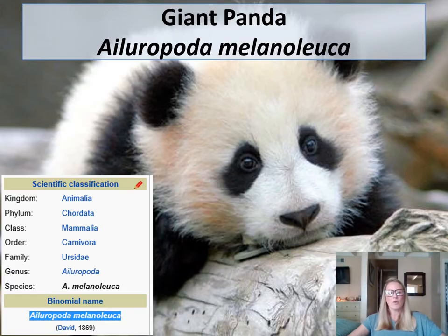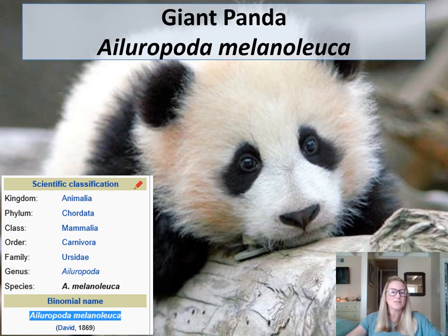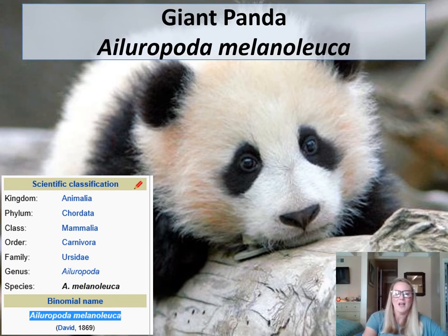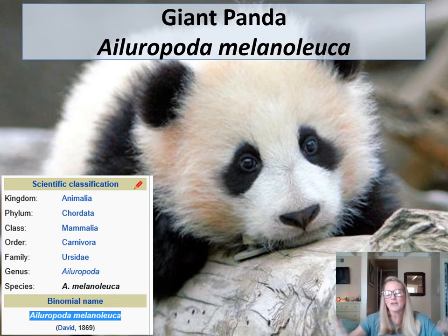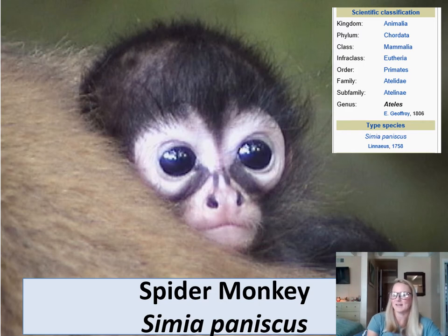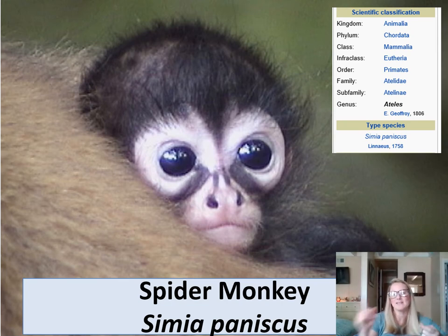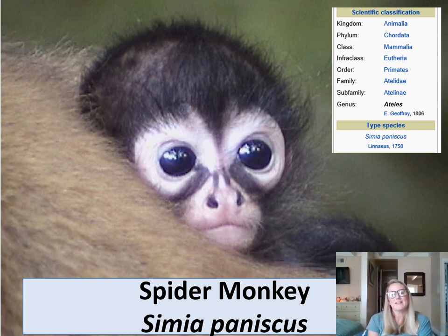If you've ever wanted to know how a certain species is organized, Wikipedia is actually pretty good for figuring out information for different species. For example, the giant panda — I screenshotted this from Wikipedia — it tells you what kingdom, phylum, class, order, family, genus, and species name it's in. Every organism has their own unique species name. Similarly, the spider monkey has its own unique species name, leucemia paniscus. You can see it's in the animal kingdom, the chordates phylum, and the mammal class.